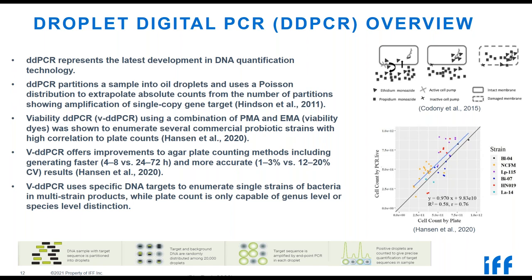For probiotics, what we're really interested in is viable cells, so we use viability ddPCR, or VddPCR. We use a combination of PMA and EMA, which are viability dyes. They eliminate dead cells from being amplified in the PCR reaction — either by membrane integrity, where if a cell has an intact membrane the dye cannot enter and bind to DNA, or by active efflux, where if the cell can pump the dye out before it binds to DNA, it's counted as live. So the dyes exclude dead cells and we're only counting viable cell DNA, giving us a viable count.